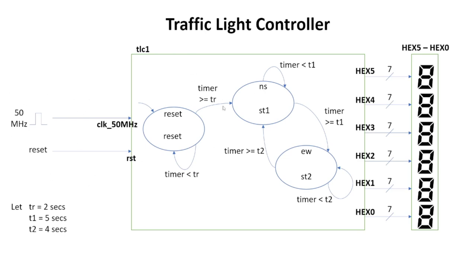Transitions are happening based on time. I have a signal called a timer, and that timer will be used to advance the state. Whenever the timer is greater than or equal to a certain variable TR, it will go from the reset state to the north-south state. Then it will transition from north-south to east-west based on T1, and from east-west back to north-south based on T2.